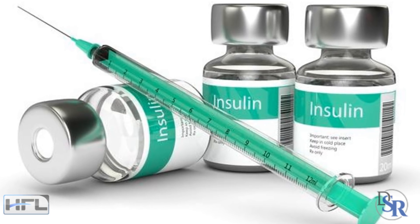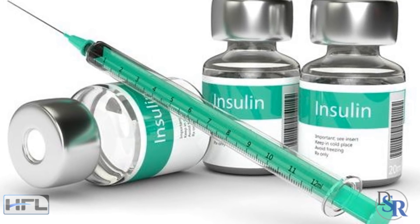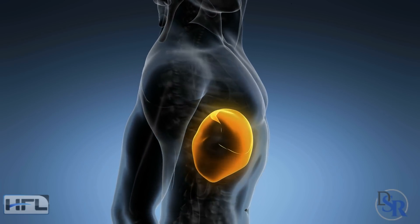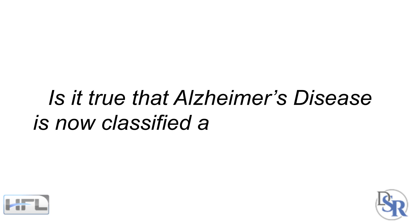One of the most powerful hormones in your body is insulin, which is released by the pancreas to help manage and lower blood sugar levels. Someone asked me, is it true that Alzheimer's disease is now classified as type 3 diabetes?